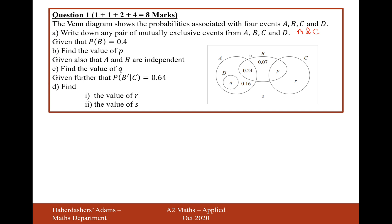Because the B circle should represent a probability of 0.4. So I'll do in my calculator 0.4 minus 0.07 minus 0.24 equals 0.09. Yeah, 0.09. So I don't need to write any calculation for that. It's only a one marker.